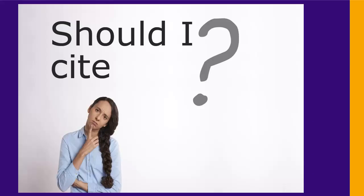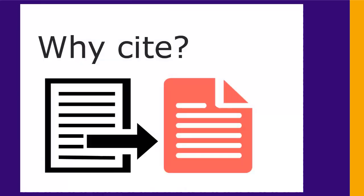Sometimes it doesn't seem clear whether you should cite something or not in your paper. In this video, we'll see when you need to and when you don't. Writing a paper is like participating in a scholarly conversation on your topic. The purpose of citing is to acknowledge and give credit to what others have said already, and to distinguish that from what you are contributing.